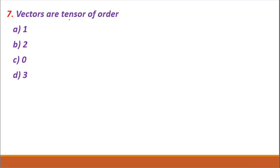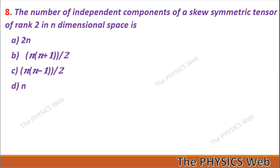Question 7: A vector is a tensor of order one — so A is your correct option. Question 8: The number of independent components of a skew-symmetric tensor of rank two in n-dimensional space is n(n-1)/2 — so C is your correct option.